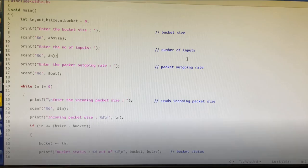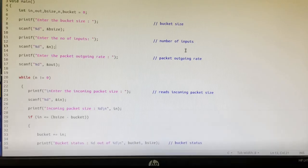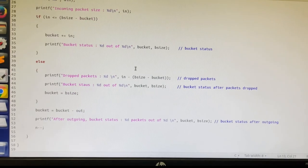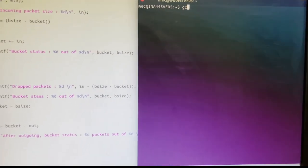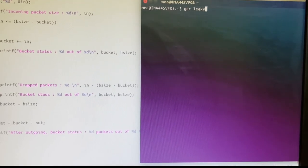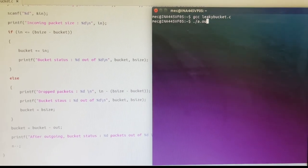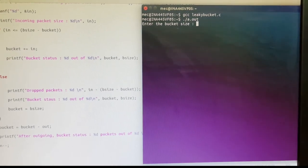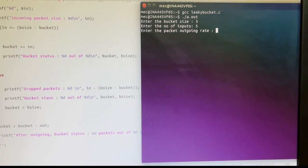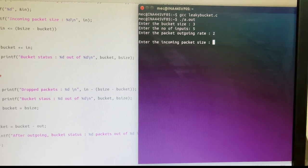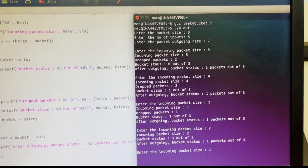Now we will look into a demo of the same. This is the program. Then in the terminal, we will compile the program. Program name is leakybucket.c. After the successful compilation the program is run. It is asking for the bucket size which will be 3, the number of inputs which will be 5, and the packet outgoing rate which will be 2. Each of the input when given it will give us the status of the bucket and packets dropped. This will repeat until all the 5 inputs have been given.